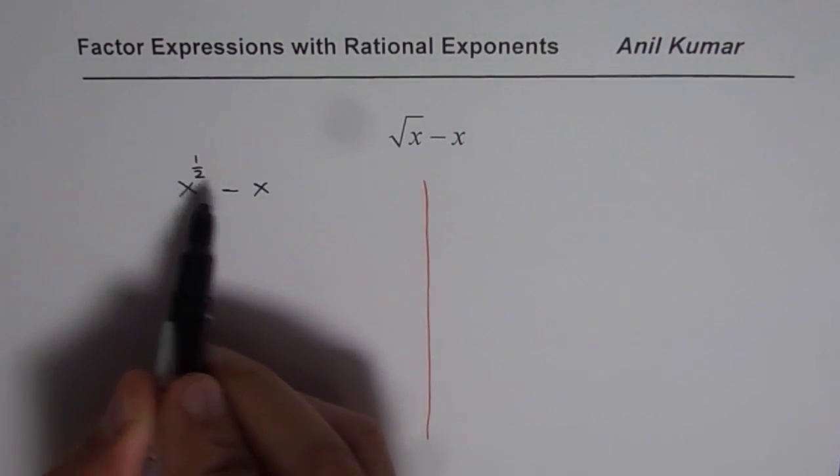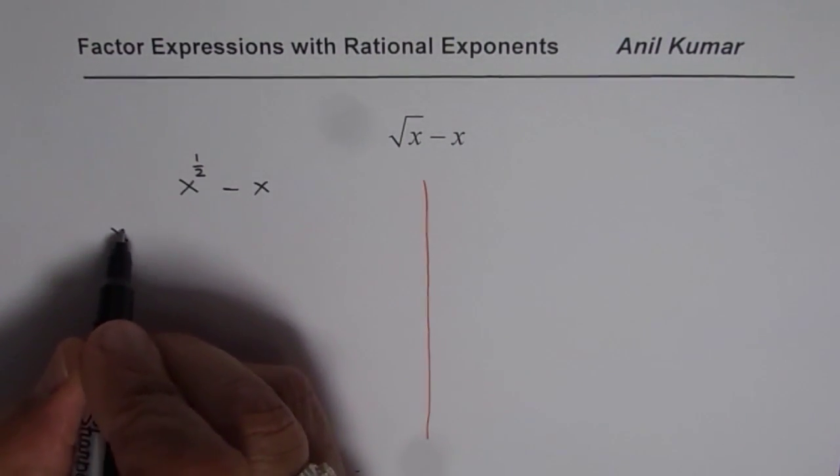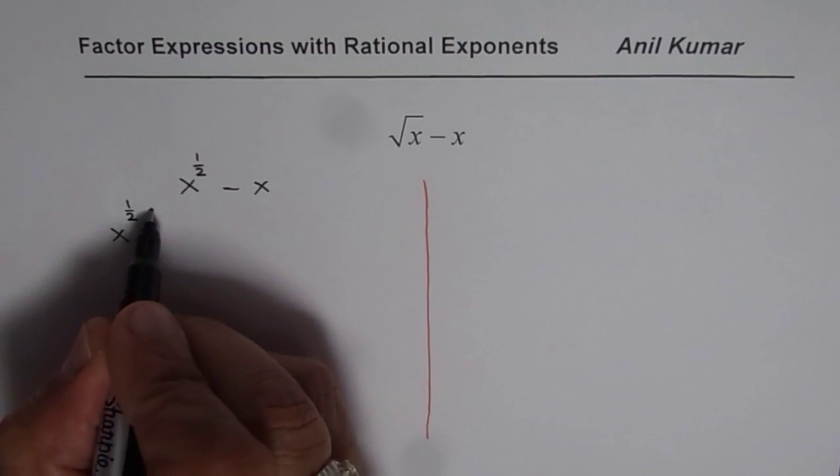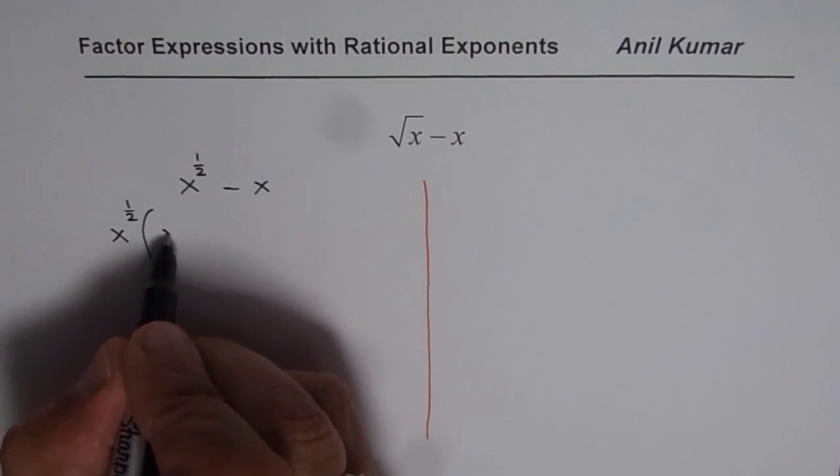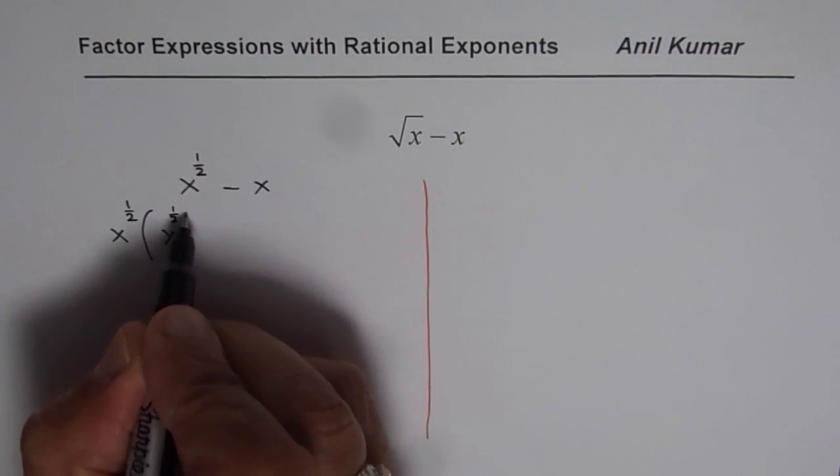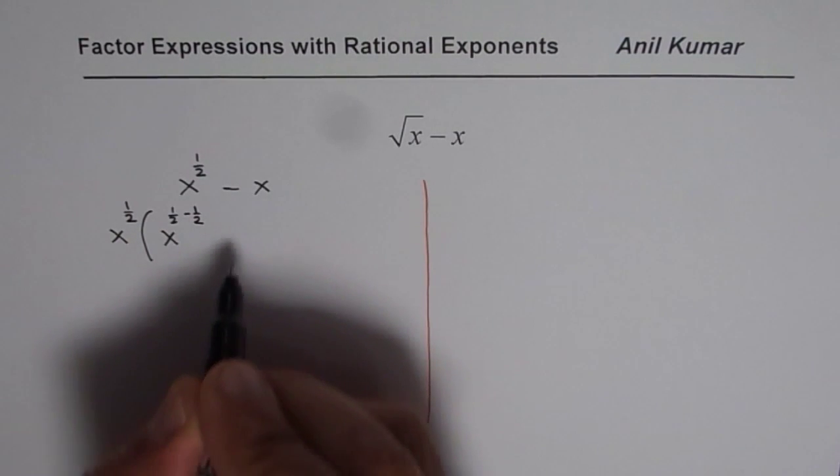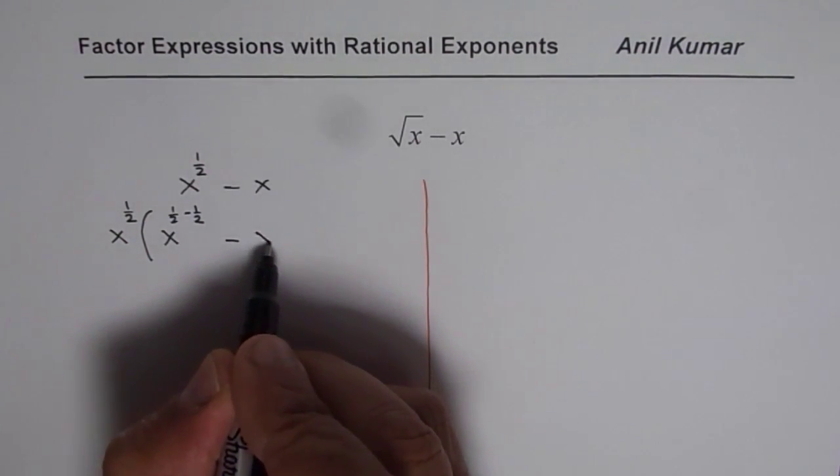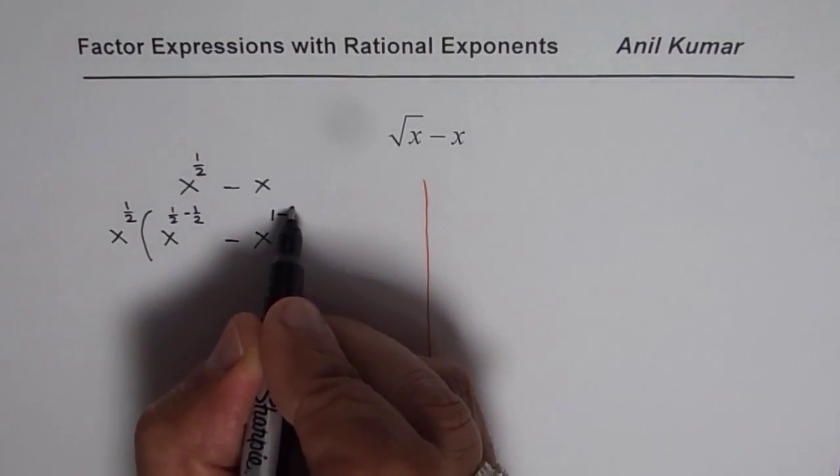Now x^(1/2) is common, so we can factor out x^(1/2). What you get here is x^(1/2 - 1/2), and here we get x^(1 - 1/2).